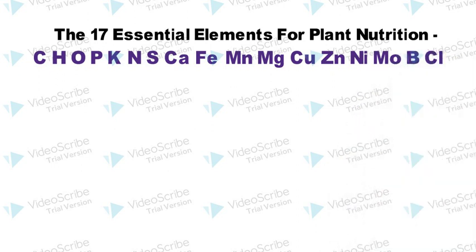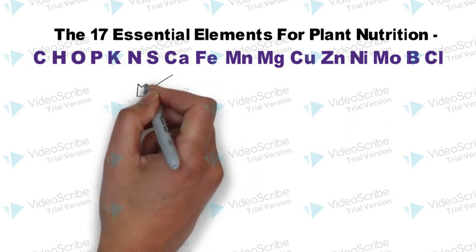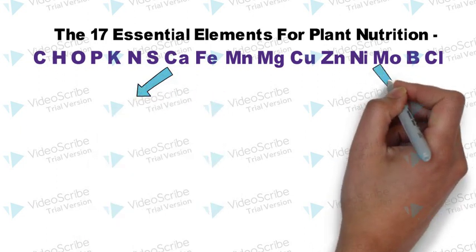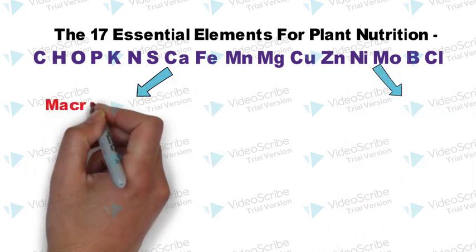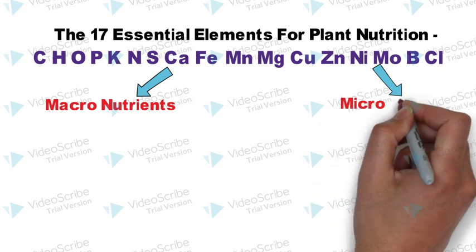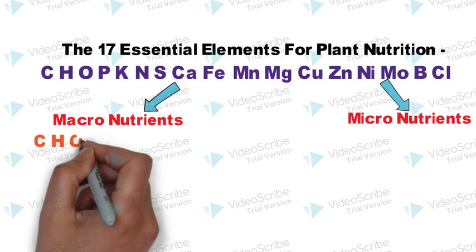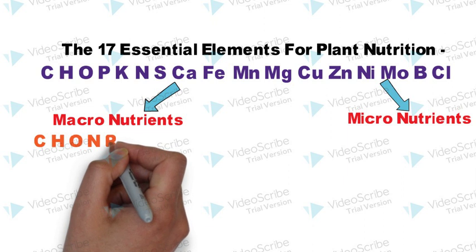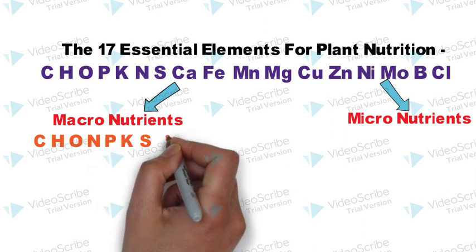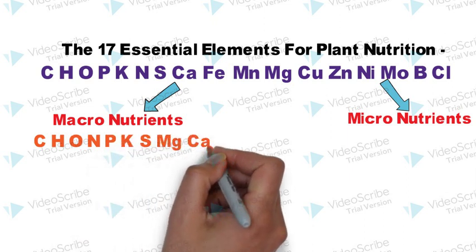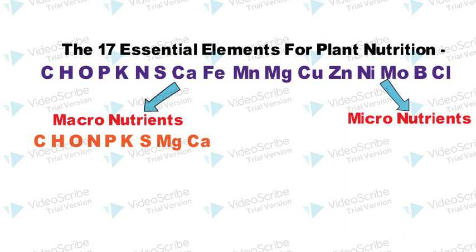So how to remember all these elements? There is an easy trick. These 17 elements are divided into two categories: macronutrients and micronutrients. First, we will tell you a simple mnemonic to remember the nine macronutrients. The nine macronutrients are carbon, hydrogen, oxygen, nitrogen, phosphorus, potassium, sulfur, magnesium, and calcium.